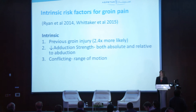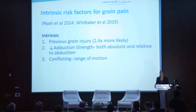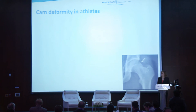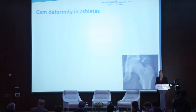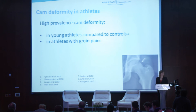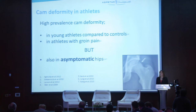Our coach follows Twitter and has been hearing about the bump on the femur — the CAM deformity — and that many footballers are having surgery to have it removed. CAM deformity is very topical at the moment. The CAM deformity is a bump that forms on the femur, most likely as a result of high-impact loading during adolescence. We know there's a high prevalence in young athletes compared to controls, and in athletes with current groin pain. However, there's also a high prevalence of CAM deformity in asymptomatic hips, so the exact relationship between CAM deformity and the development of hip and groin pain remains uncertain.